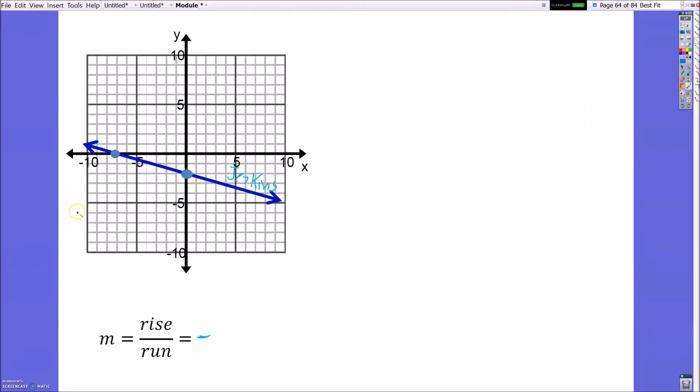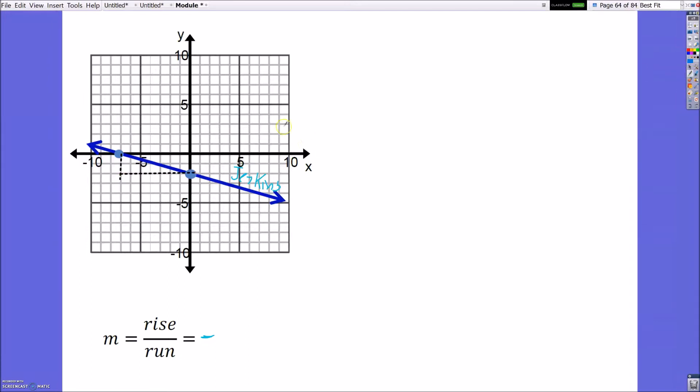Let's go ahead and look at this now. If I start at this point, I'm going to go down 1, 2, and I think that's it. I go down 1, 2. Yes. And then I'm going to go over to the right, 1, 2, 3, 4, 5, 6, 7.